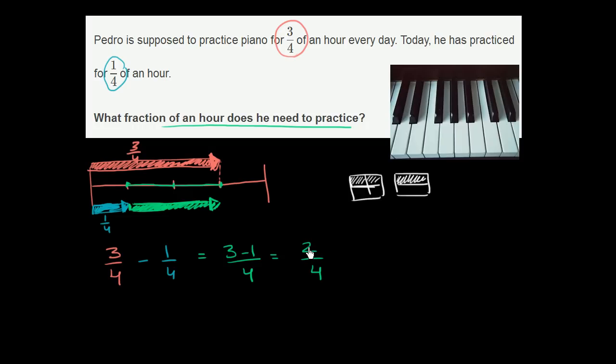And if you wanted to work it out mathematically, you just have to do the same thing to the numerator and the denominator. So let's divide the numerator and the denominator by 2, because they are both divisible by 2. That's actually their greatest common factor. So 2 divided by 2 is 1. 4 divided by 2 is 2. So what fraction of an hour does he need to practice? He's got to practice half an hour.